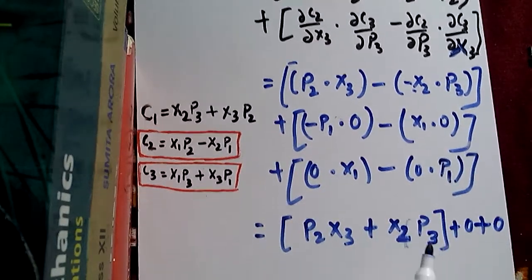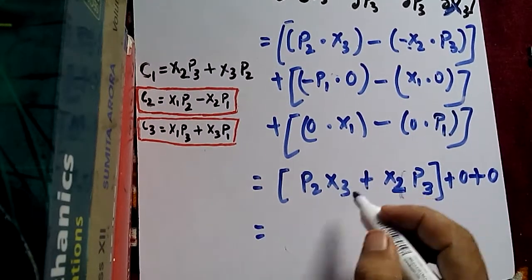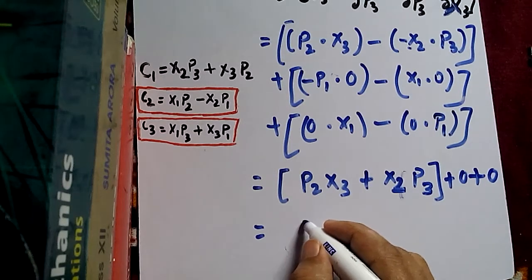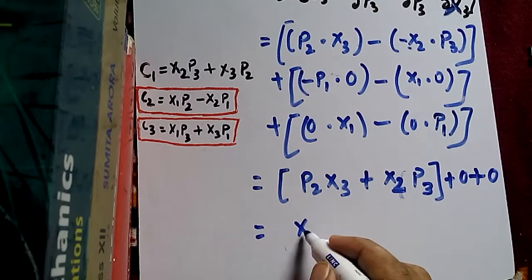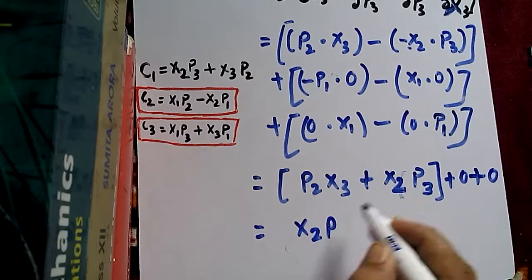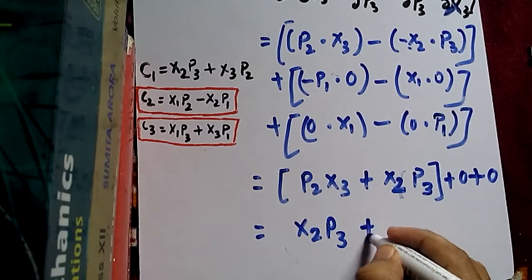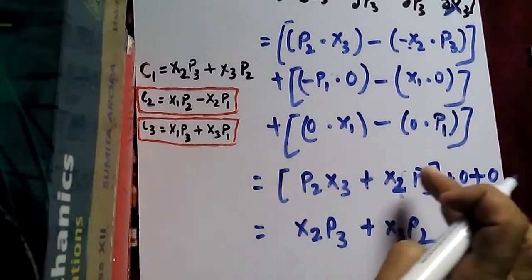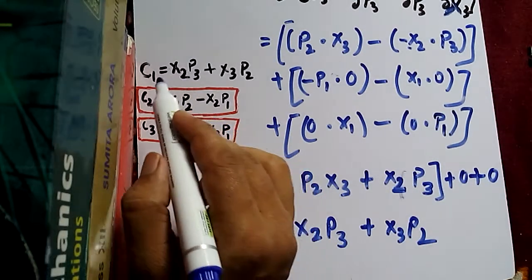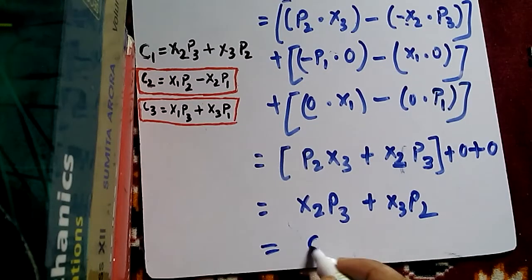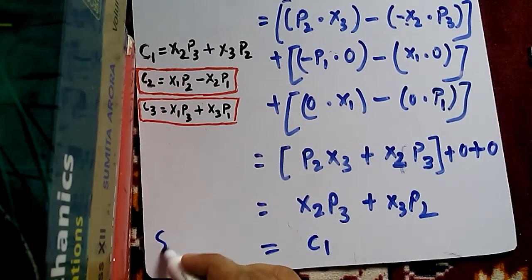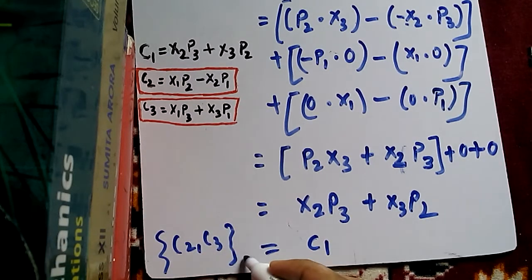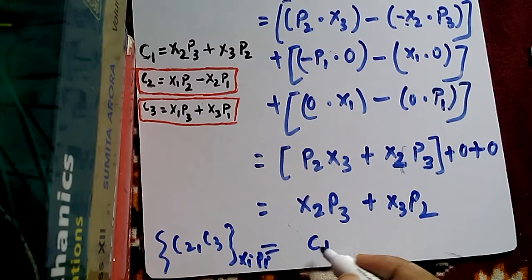So from the three terms, the first term gives p2*x3 minus x2*p3, the second term is zero, and the third term is also zero. We may rewrite this as x2*p3 minus x3*p2 — wait, it's p2*x3 minus x2*p3. You may see this is the same as C1. So the Poisson bracket of C2, C3 with respect to x_i, p_i equals C1.